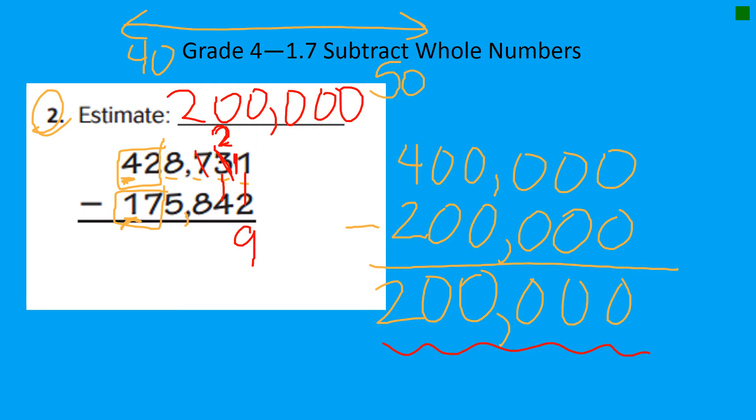Go to the next place value over. It's a 7. Goodbye. We are taking one of you. And you are only 6 now. So we take that set and give it to the tens place this time. So now instead of 2 minus 4, we have 12 minus 4.